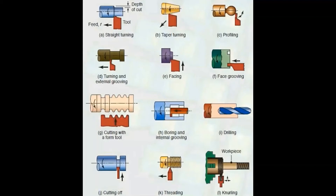Profiling — we usually see this on objects like door handles. This is the profiling operation. The cutting tool can be used to rotate in a circular path. The measurement is accurate. We also have turning and external grooving. Let's talk about grooving and external grooving — this is the operation where material is cut to form a groove.